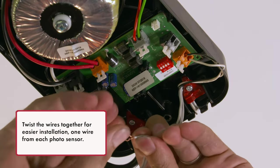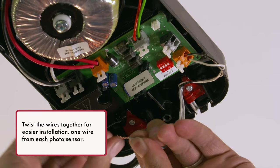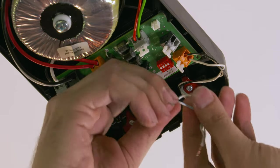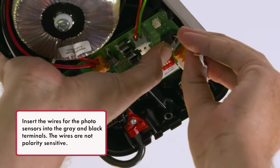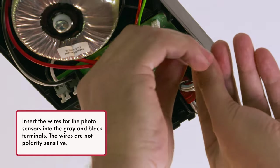Twist the wires together for easier installation, one wire from each photo sensor. Insert the wires for the photo sensors into the grey and black terminals. The wires are not polarity sensitive.